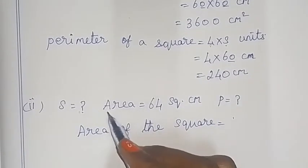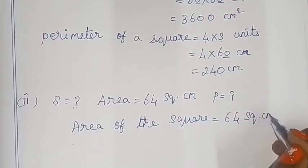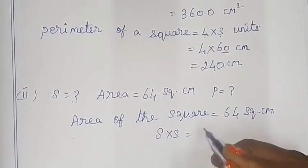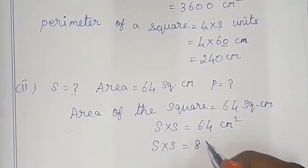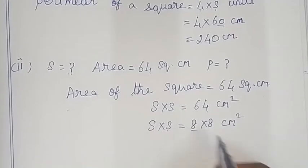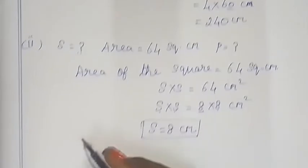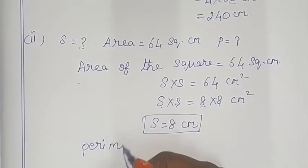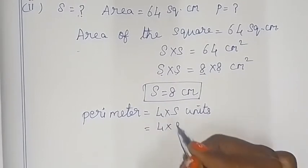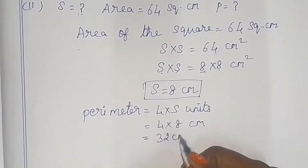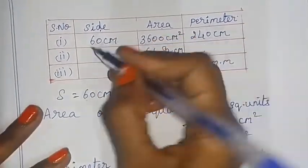The area of the square is 64 cm². Side × side = 64. So 8 × 8 = 64, meaning one side = 8 cm. Perimeter = 4 × S = 4 × 8 = 32 cm. So side is 8 cm and perimeter is 32 cm.